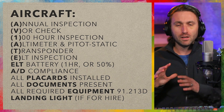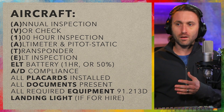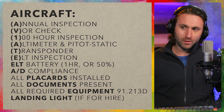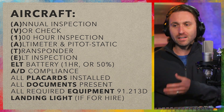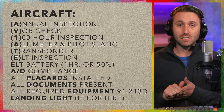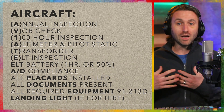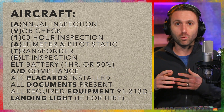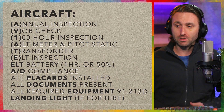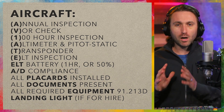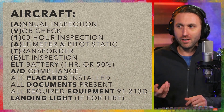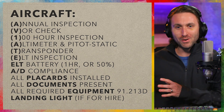Moving on to the aircraft — this one is more structured. The AV8 acronym covers: Annual inspection, VOR check for instrument flight, 100-hour inspection, Altimeter, Pitot-static system, Transponder, and ELT — checking that the battery hasn't been used for over an hour or fallen below 50%. All airworthiness directives must be complied with, placards installed, all documents present, required equipment for day, night, IFR, or VFR flight, and a landing light if the flight is for hire. With the aircraft, things generally either work or they don't — it's more cut and dry than the pilot assessment.